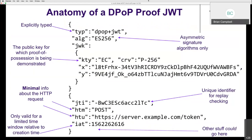The DPoP proof itself is a JWT. It has a type, supports only asymmetric signatures, and the JWK header of the proof contains the public key for which proof of possession is being demonstrated. It includes memo claim information about the HTTP request — basically the method and the URI, omitting any fragment or query parameters — plus a unique identifier for replay checking.